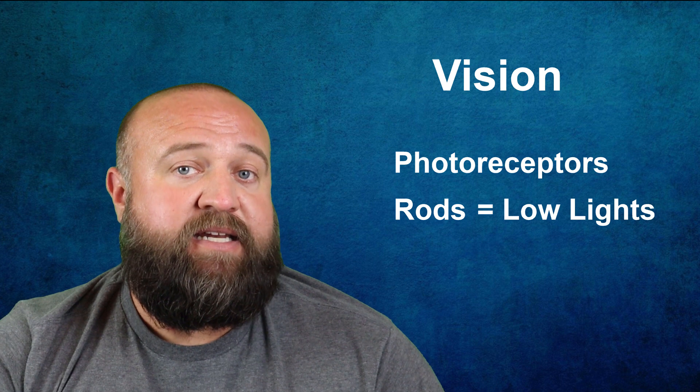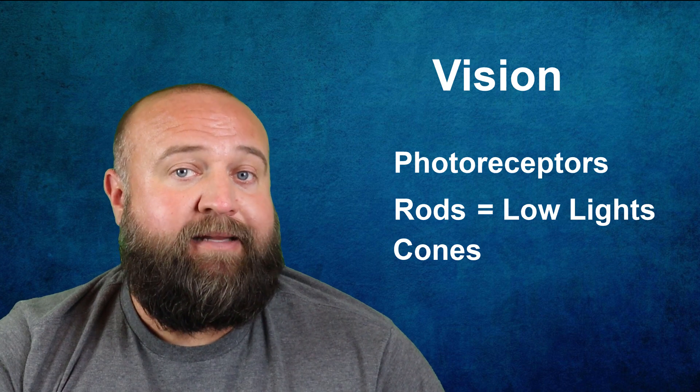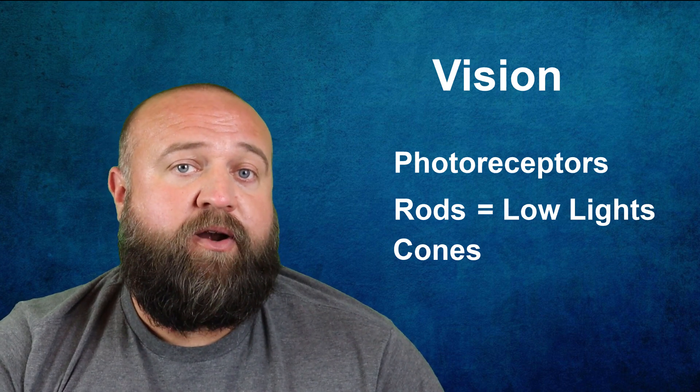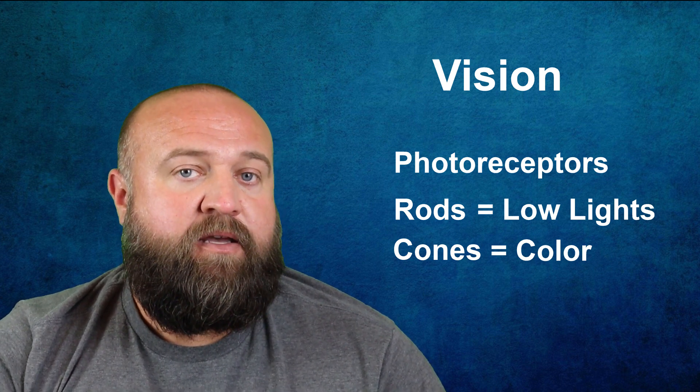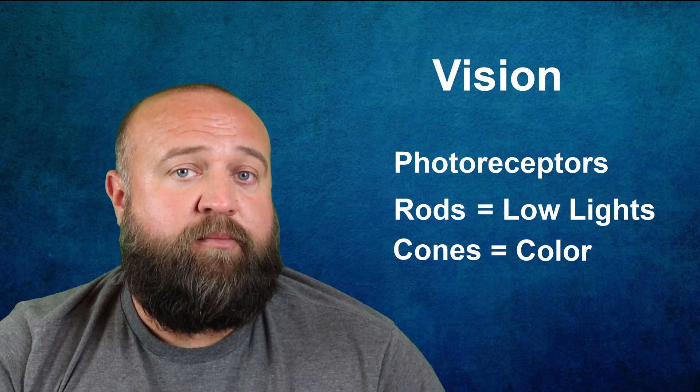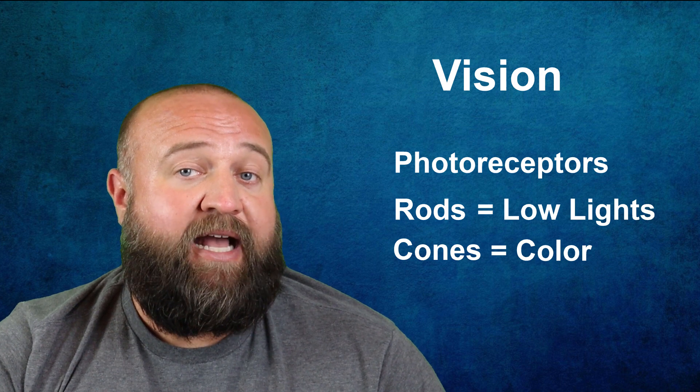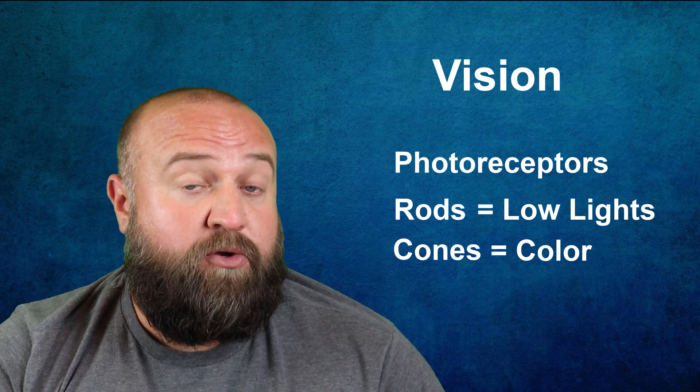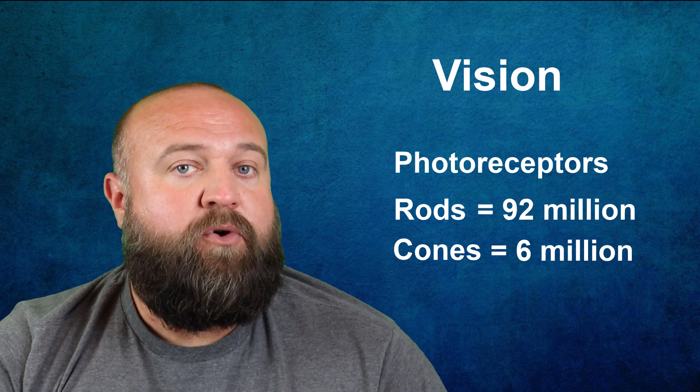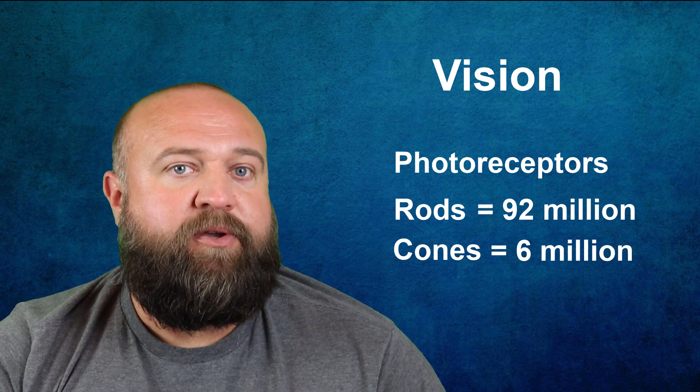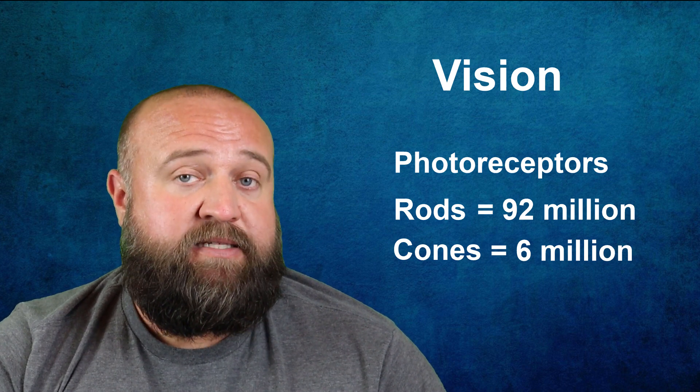The fovea contains another type of photoreceptor which are known as cones. Cones work best in bright light conditions and are important for helping us to perceive color as well as to detect fine details in images. You see a lot of different information regarding the overall number of photoreceptor cells in a human eye. Probably the most frequent information I have seen is that there are about 6 million cones in the fovea and about 92 million rods in the retina. Of course, these are estimates, which is probably why you would see pretty widely differing numbers, but there certainly are many times more rods than cones.